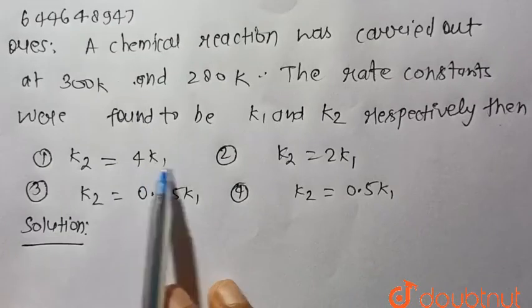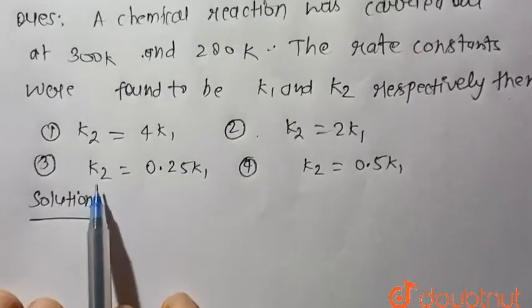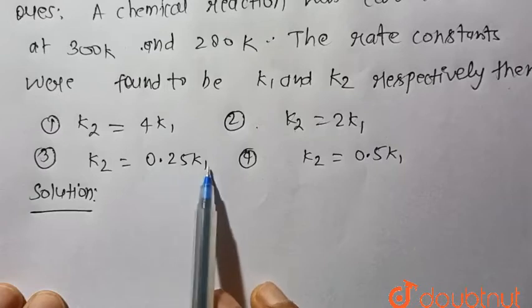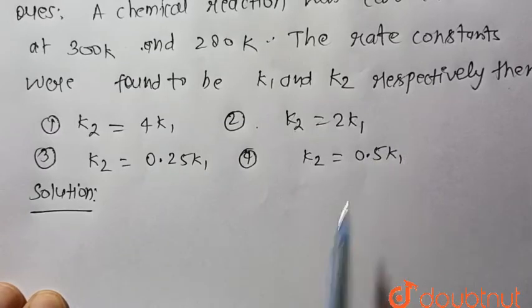Then we have to find the relation between k1 and k2. Option 1: k2 equals 4k1. Option 2: k2 equals 2k1. Option 3: k2 equals 0.25k1. Option 4: k2 equals 0.5k1.